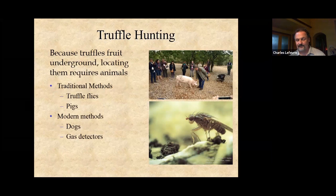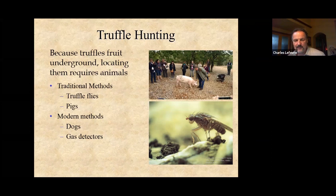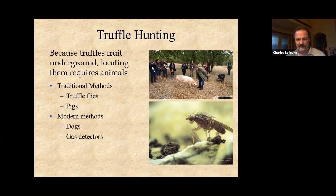The way truffles are found is with animals. The most ancient method is to look for flies that want to lay their eggs on the truffles. A more recent innovation was using pigs, which don't need to be trained — they automatically know they want to eat a truffle. But practically none of the truffle researchers at a recent conference, including those from France, had ever seen a truffle pig working. It's not something people do anymore, partly because truffle hunting is a secret business — if you're using a pig, everybody knows what you're doing, and you'd have to drive your pig around in a little French car. The modern method is dogs. People have developed gas detectors like tools that find natural gas leaks, but a dog is simply better because it can find a truffle from 100 feet away and run to it.